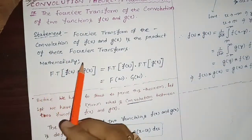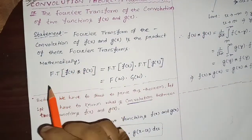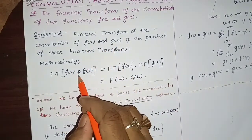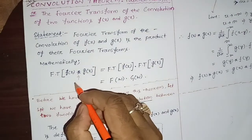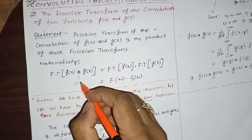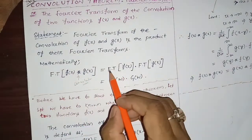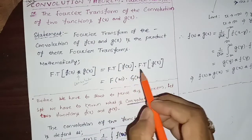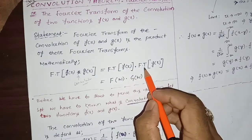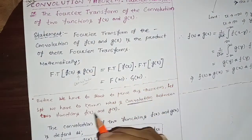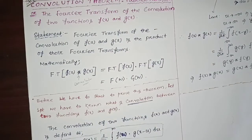Mathematically, we can write: the Fourier transform of the convolution of two functions f(x) and g(x) — this symbol is the convolution — will be equal to the Fourier transform of f(x) into the Fourier transform of g(x), or we can write capital F(ω) into G(ω).